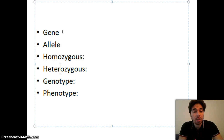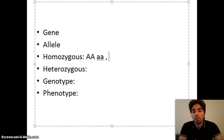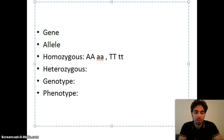This leads us to the next two terms: homozygous and heterozygous. If the two alleles for a given trait or gene are the same — for example, big A big A, or small a small a, or in Mendel's tall/short example, big T big T or small t small t — we call this a homozygous organism or homozygous person for that trait, because the two alleles are the same.